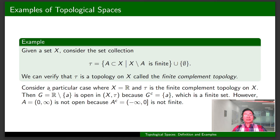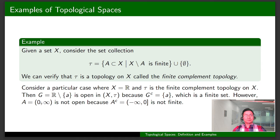Let's consider a particular case where X is ℝ and τ is the finite complement topology on X. This set is open in X with the finite complement topology because its complement is a finite set. However, if A is the interval from 0 to infinity, then A is not open in this topological space because its complement is not finite.